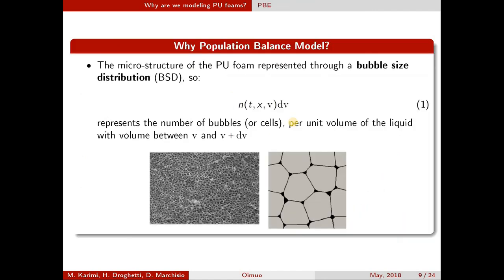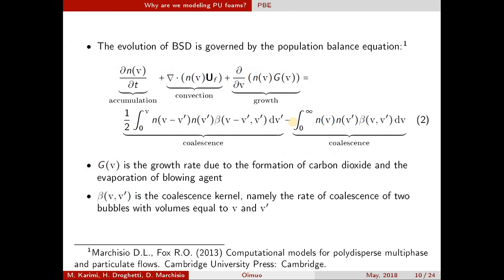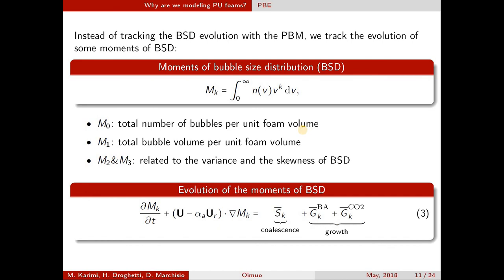Let me walk you through each of these steps. First, we need the population balance, because the final PU foam product depends on the size of the cells. So we are solving number density equations. We solve the population balance equation, which includes accumulation, convection, and two source terms for growth and coalescence. These growth and coalescence terms are related to the kinetics of the reaction. Of course, we are not solving this equation directly — we take a few moments, and by having those moments we can reconstruct the size distribution. The moments equation includes three different source terms: one due to coalescence and two due to growth.